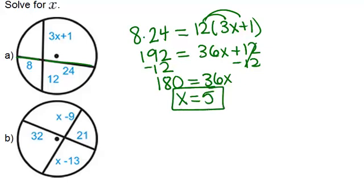And in part B, we're going to do the same thing. First, let's multiply 32 times 21, those are two segments on the same chord, equals X minus 9 times X minus 13.